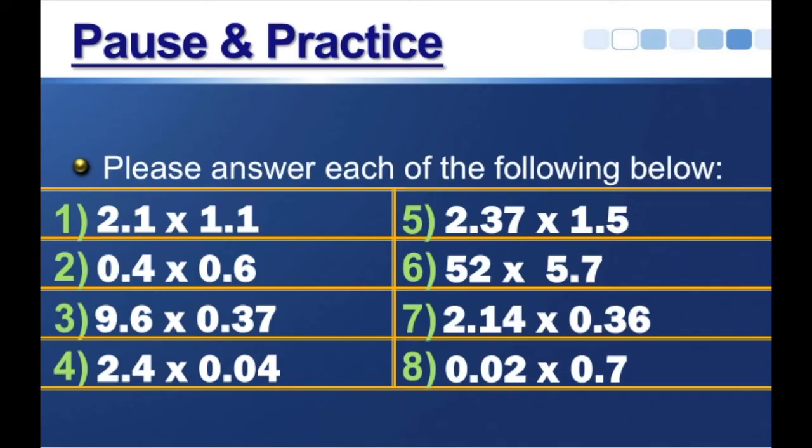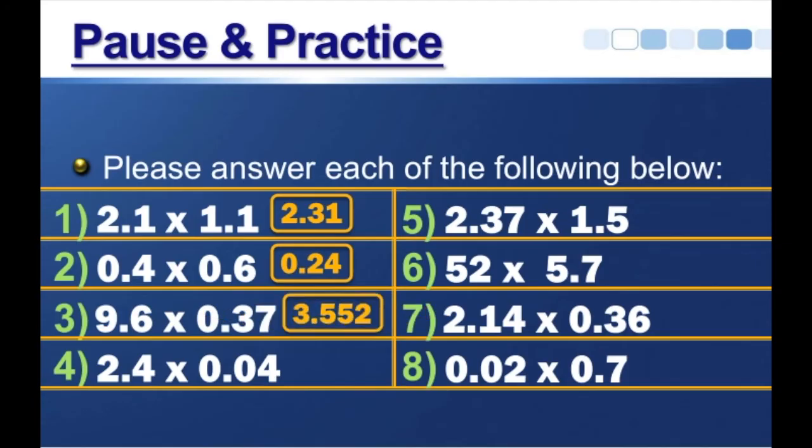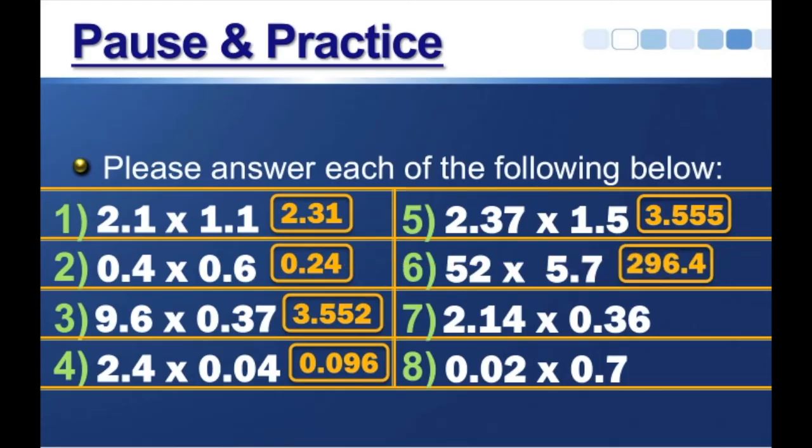So let's go over our answers. Number 1 is 2.31. Number 2 is 0.24. Number 3 is 3.552. Number 4 is 0.096. Number 5 is 3.555. Number 6, 296.4. Number 7, 0.7704. And number 8, 0.014. Number 9, 0.104.